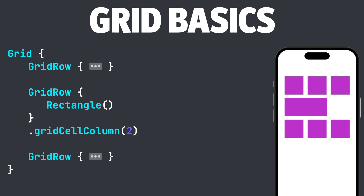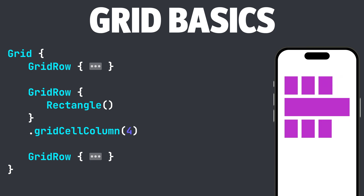When you add items into a grid row, the grid row which contains the most cells determines how many columns the grid contains. In our case, we have three rectangles in our first grid row and three in our last grid row. So if we updated our gridCellColumns to three, our grid would look like this. Remember, the grid gets its column count from the row with the most cells. If we changed gridCellColumns to four, we would see our grid change accordingly.